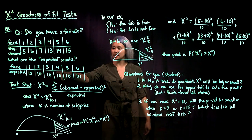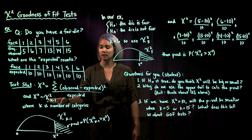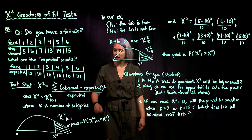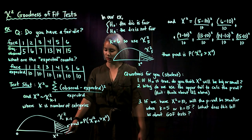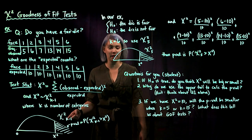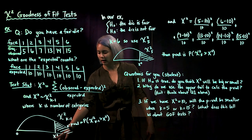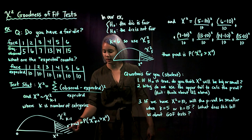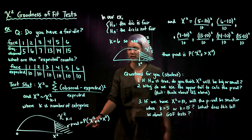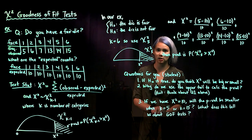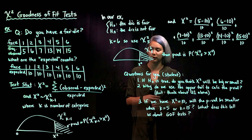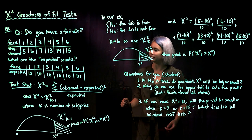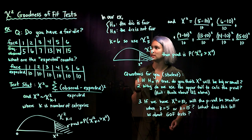We have our test statistic and its sampling distribution. To calculate the p-value, consider a sketch of a chi-squared distribution with k minus one degrees of freedom, with our test statistic x-squared marked on it. The p-value is the shaded upper tail area — the probability that a chi-squared distribution with k minus one degrees of freedom is greater than our test statistic.